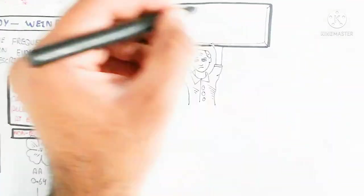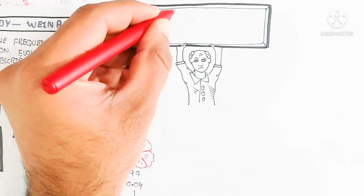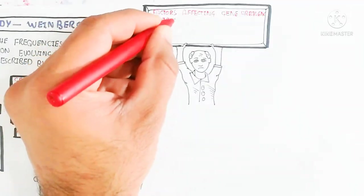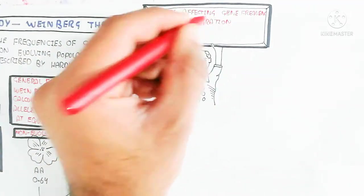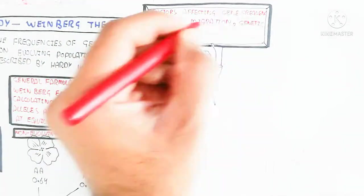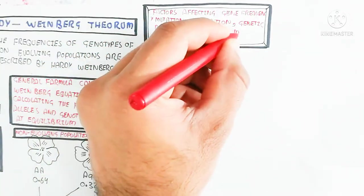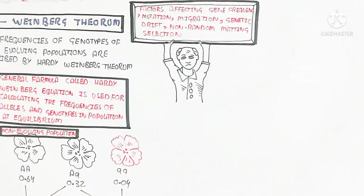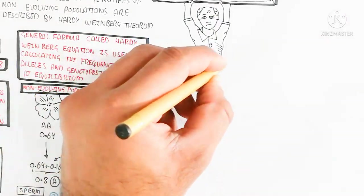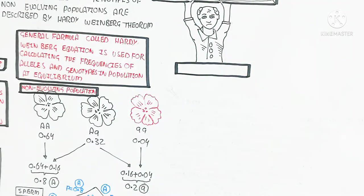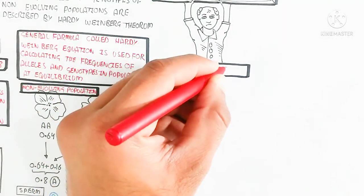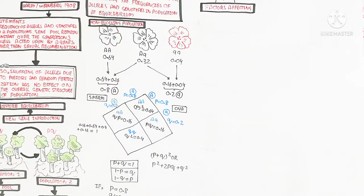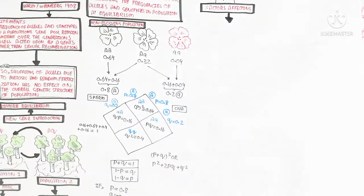In the case of factors affecting gene frequency: mutation, migration, genetic drift, non-random mating, and selection are the main factors that disturb Hardy-Weinberg equilibrium. We will discuss each factor in detail. Non-random mating is the first factor — if non-random mating occurs, the Hardy-Weinberg theorem will be disturbed and evolution will occur.